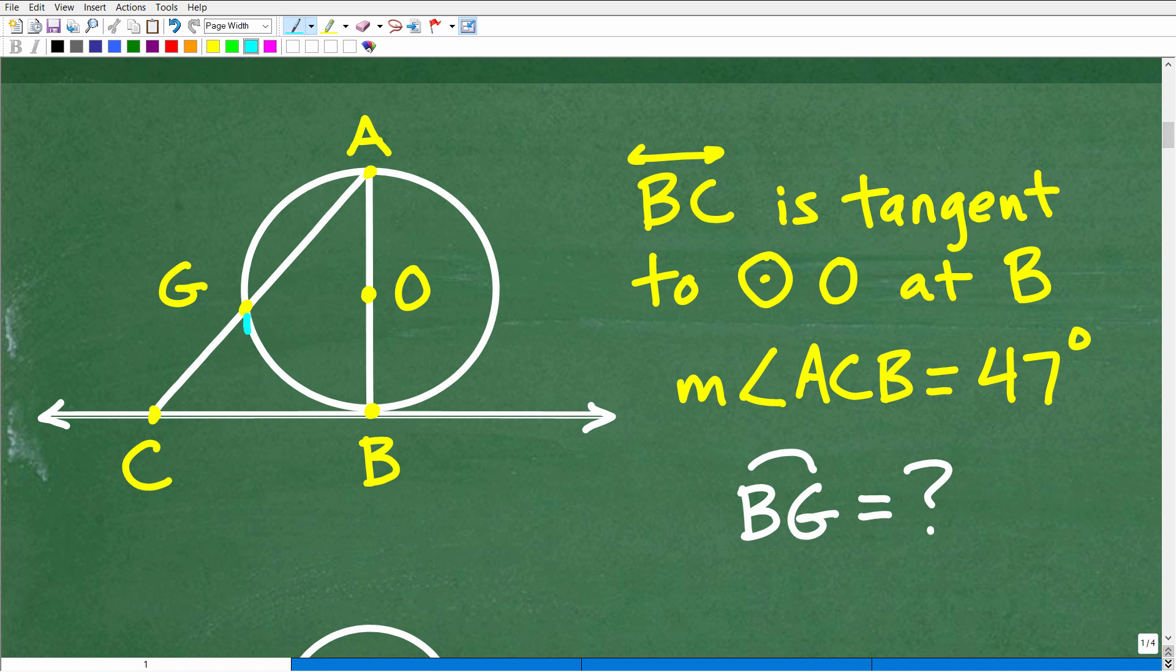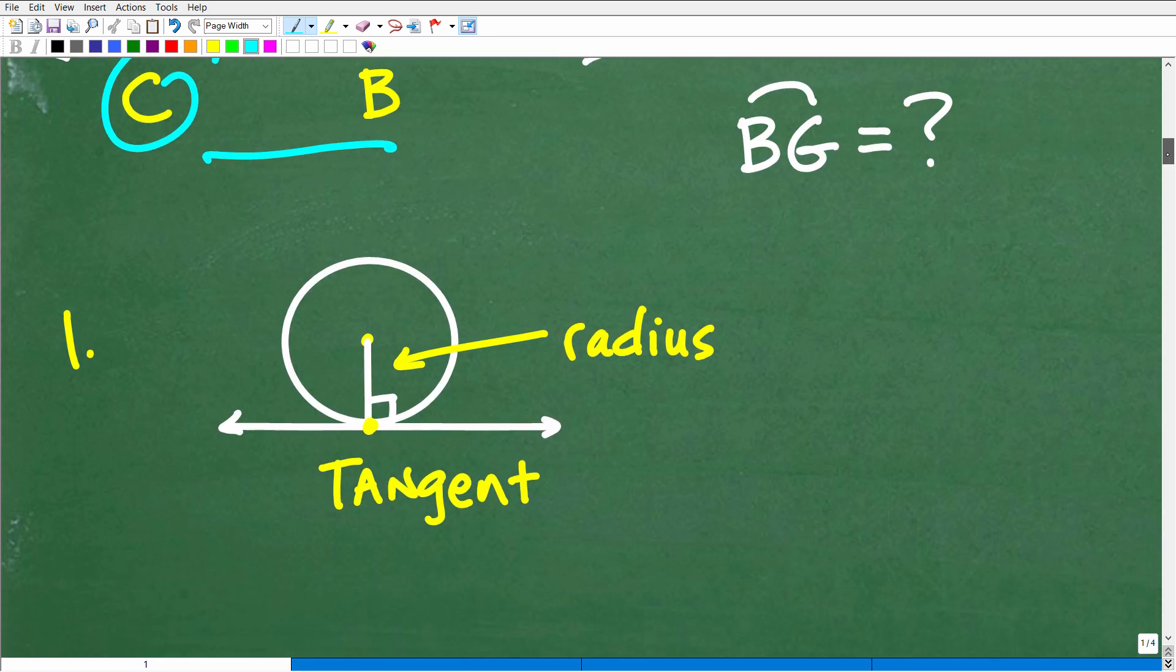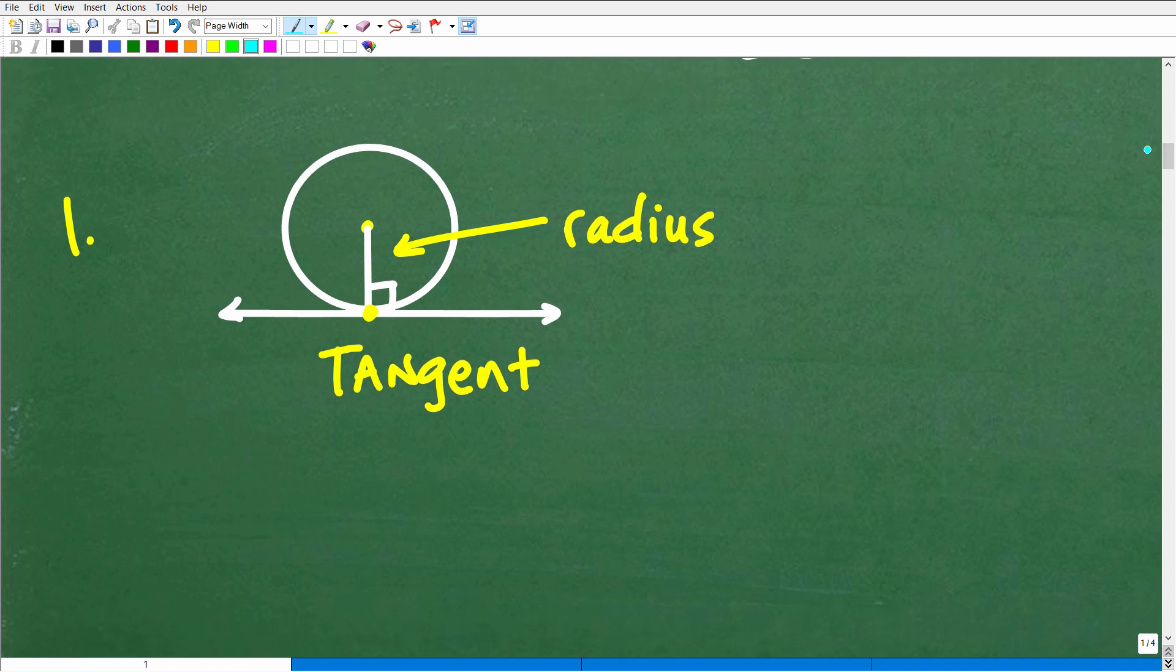Again, I kind of explained to you what's going on. We're looking for the measure of this arc right here. And all we know is that this line BC is tangent to the circle at point B. We also do know the measure of angle ACB is 47 degrees. That's this angle. We know that angle and we know the fact that this line is tangent to this circle. That's pretty much all we know, and we're looking for this arc measure. So how do we do this? Well, let's go ahead and get into the first thing we need to know about the situation.